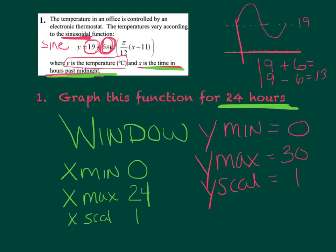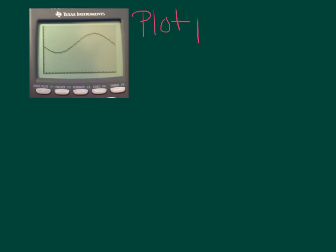Once you've hit your window button and typed all of this in, you can hit the graph key and it should nicely graph this for you. Here's a picture of my screen — hopefully your calculator shows the same thing. If not, maybe you missed a parenthesis or typed your window in wrong. You can see I've gone from 0 to 24, max at 25, and I started Y at 0. To plot points, go to your table — that's second graph — and you will see all the points you're going to plot.